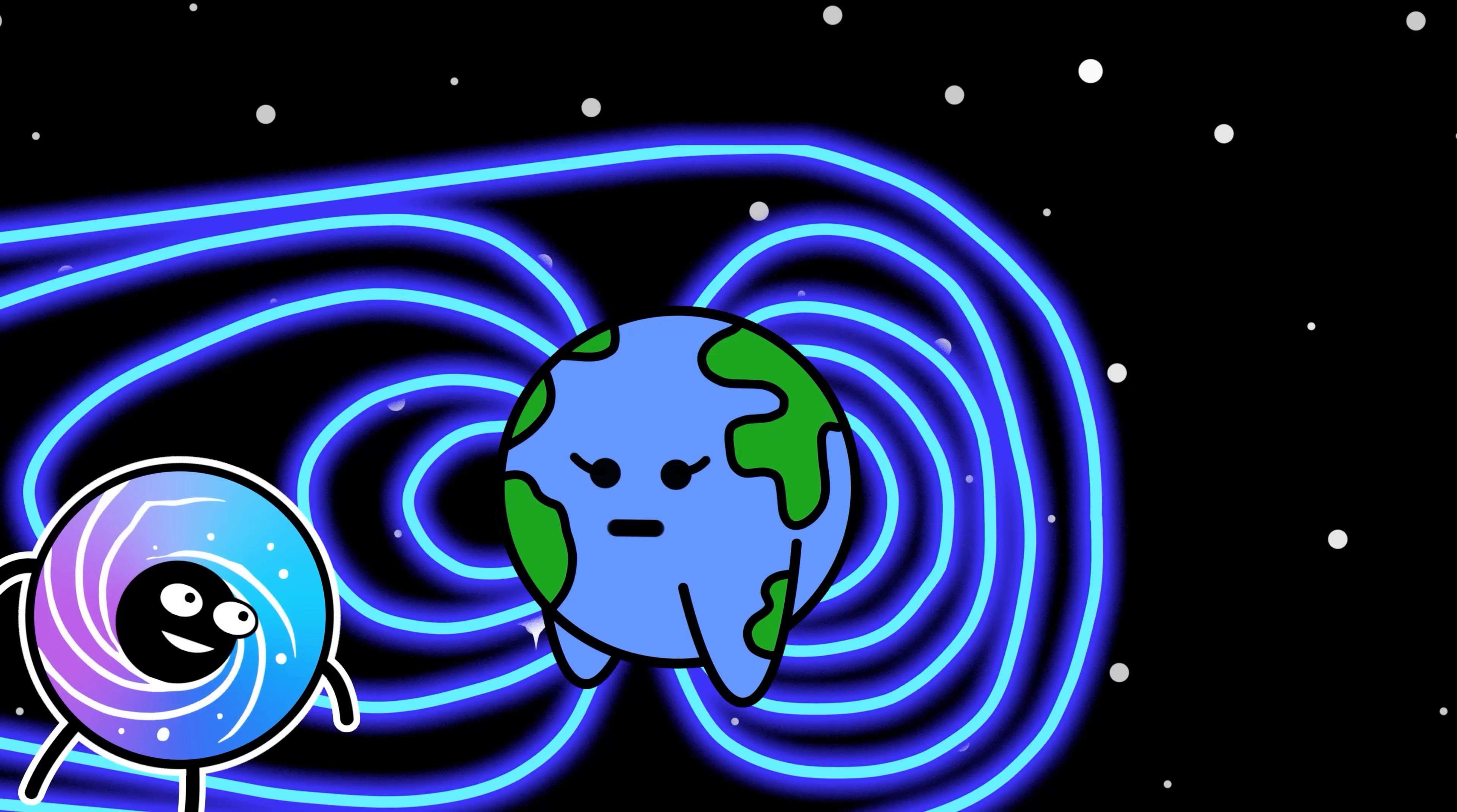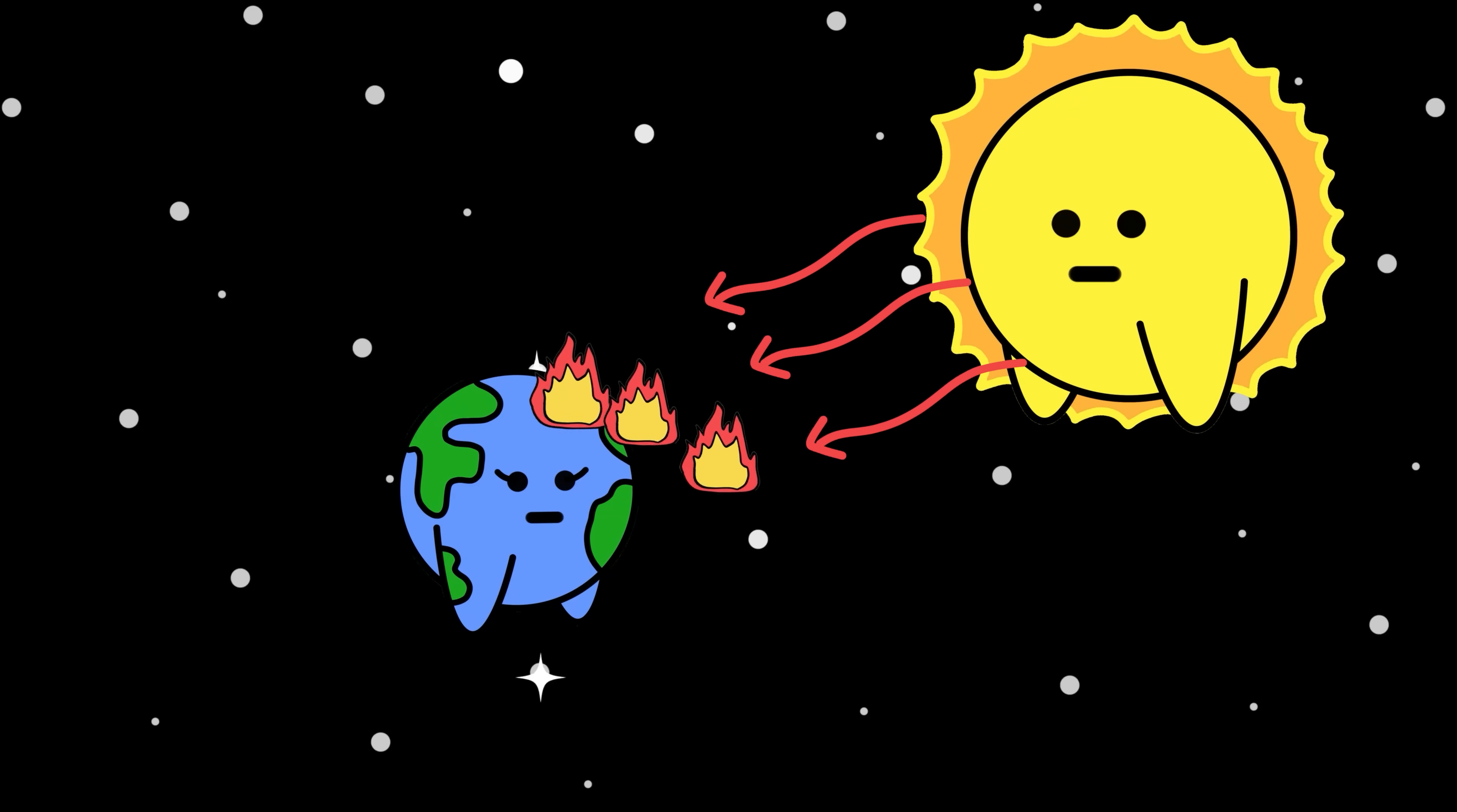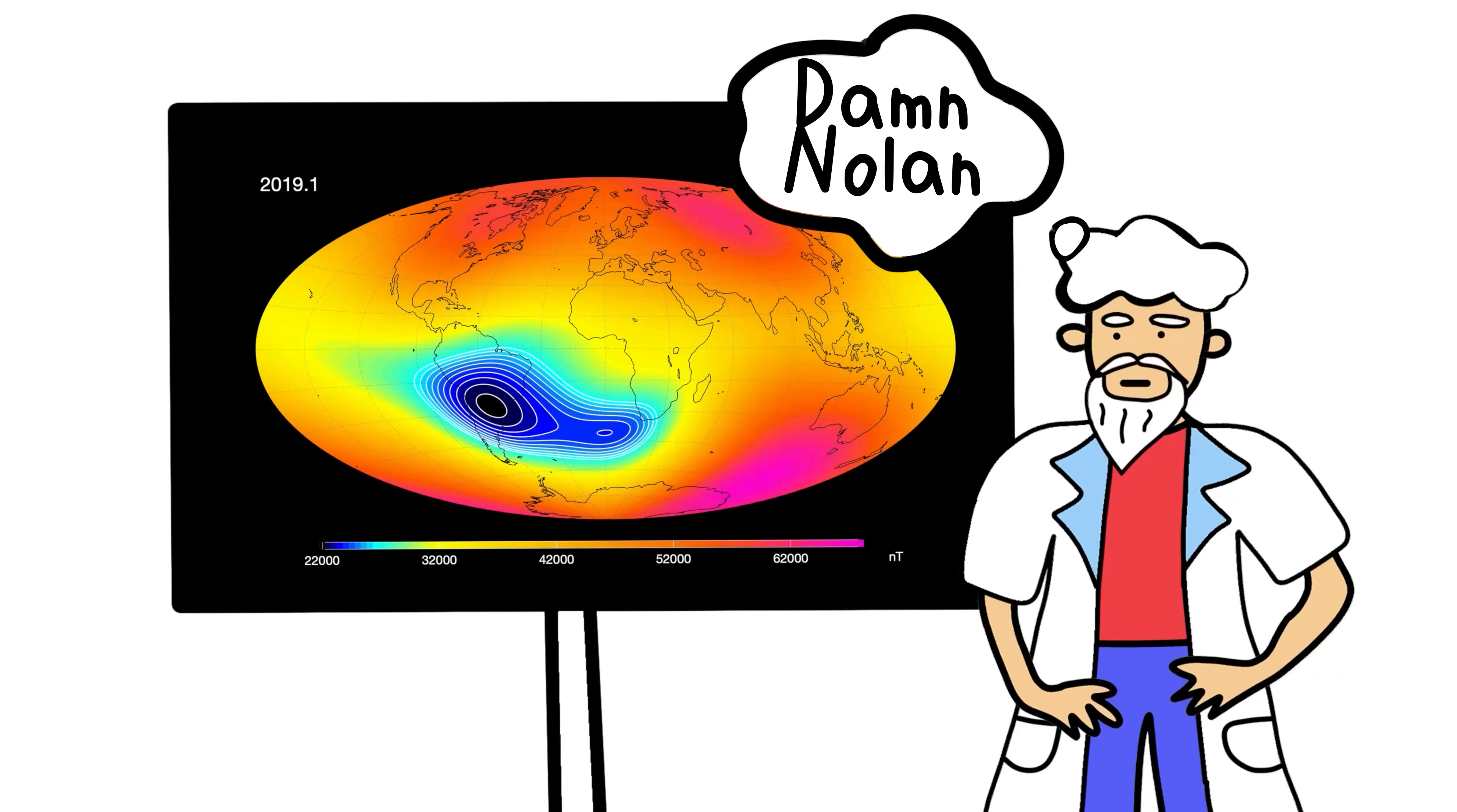It's not instant, though. The process unfolds over thousands of years, but the effects on our civilization would be dramatic. Our magnetic field is a shield deflecting deadly radiation from the sun, and during a reversal, that shield weakens. Satellites would glitch, global navigation would falter, and massive solar storms could pour straight into our atmosphere, frying power grids and leaving entire continents in the dark. The last full reversal happened 780,000 years ago, and on average, they occur every 300,000 years. By that math, we're overdue. Scientists can already see signs of the field weakening, with the so-called South Atlantic anomaly growing larger every year.